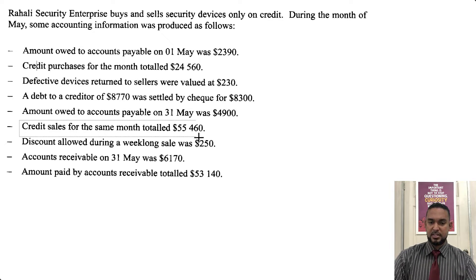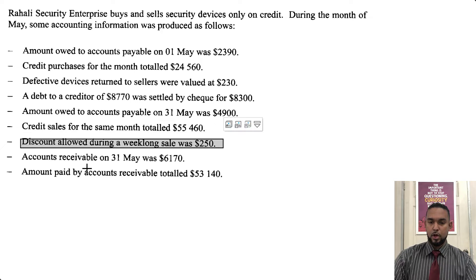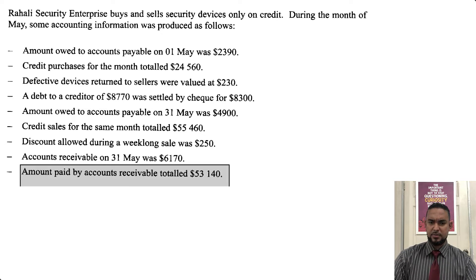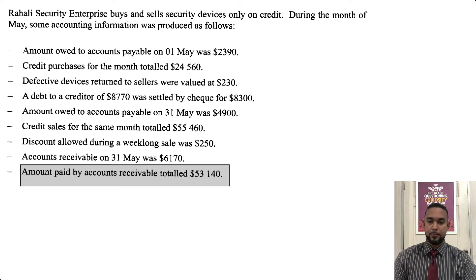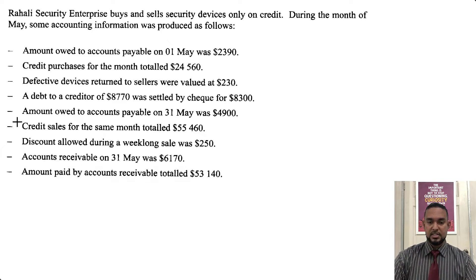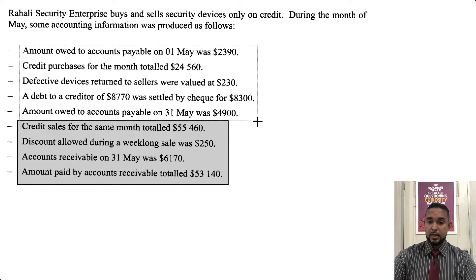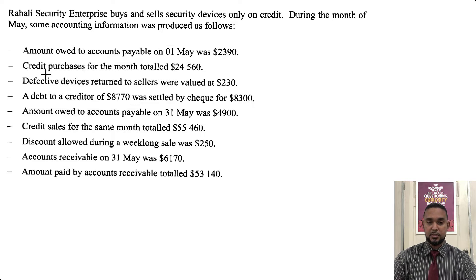Then we have credit sales for the same month, discount allowed, accounts receivable at the end of the month. Where's the opening balance? And finally, we have the amounts paid by or received from the accounts receivable people. So these last four items are for the debtors control account — the accounts receivable control account — and these five are for the creditors.